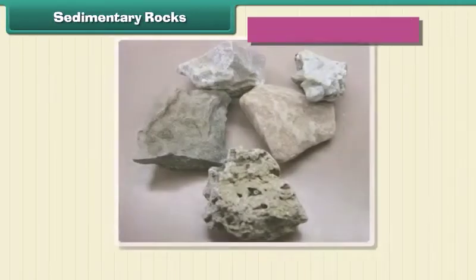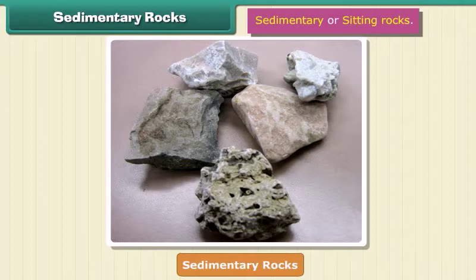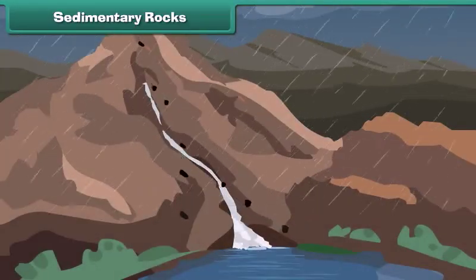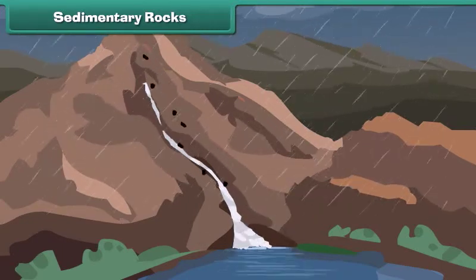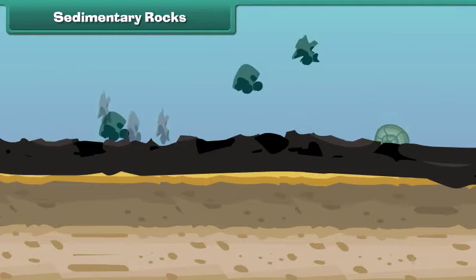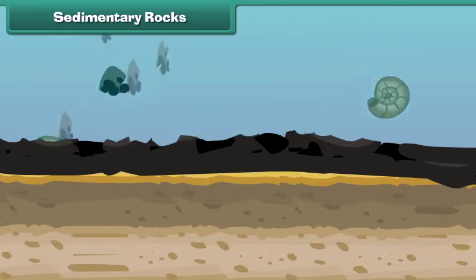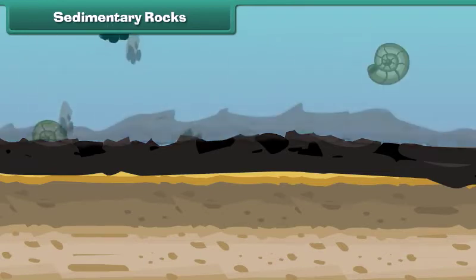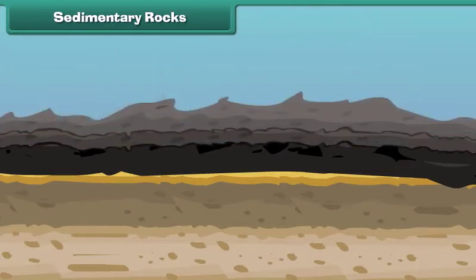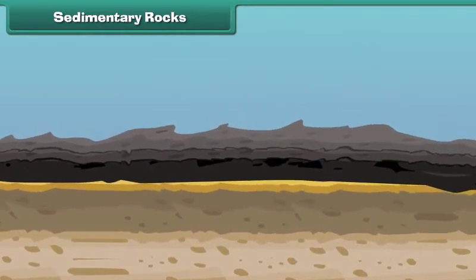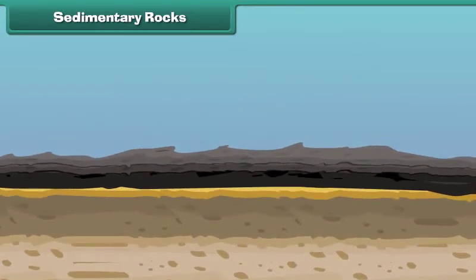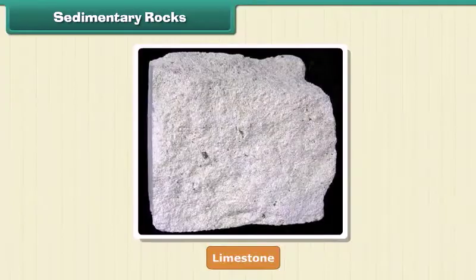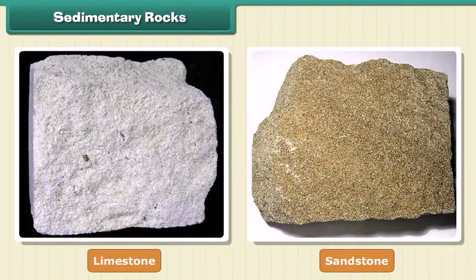The second type of rock is sedimentary rock. These are also called sitting rocks. Rocks roll down, crack, and hit each other, then they are broken down into small particles called sediments. The sediments are transported and deposited by wind, water, etc. These loose sediments are compressed and hardened to form layers of rocks called sedimentary rocks. Limestone and sandstone are examples of sedimentary rock.